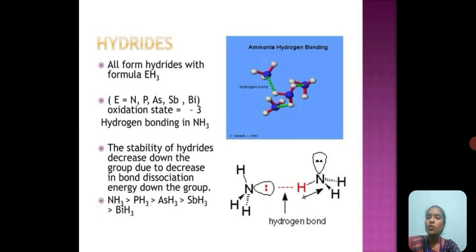Hydrides all form with formula EH3, where E is any element from the nitrogen family. It may be nitrogen, phosphorus, arsenic, or bismuth. The general oxidation state is minus 3. Ammonia is also one of the hydrides. The stability of hydrides decreases down the group due to the decreasing bond dissociation energy down the group.